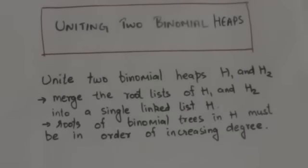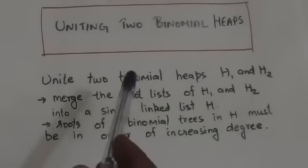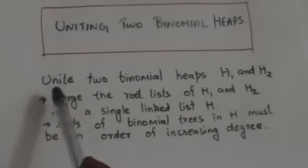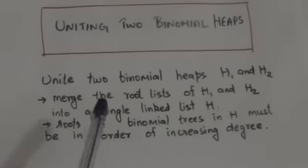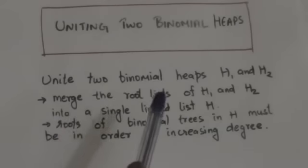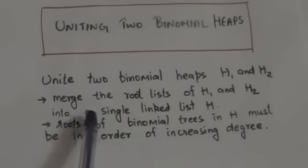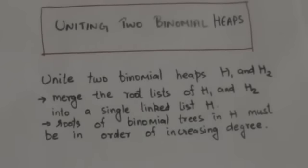Hello friends, welcome back. In this tutorial we will learn how we can unite two binomial heaps. Suppose there are two binomial heaps H1 and H2 and we have to unite them. First we will merge the root lists of binomial heaps H1 and H2 into a single linked list H. Roots of binomial trees in linked list H must be in order of increasing degree.